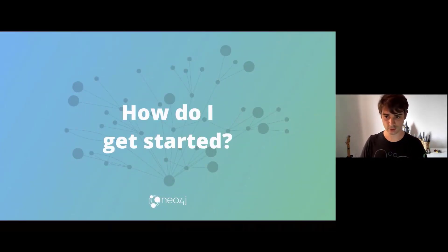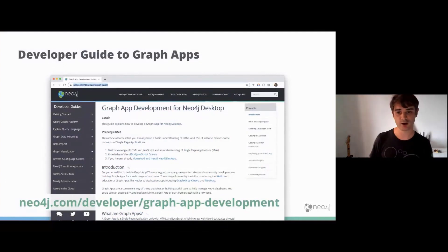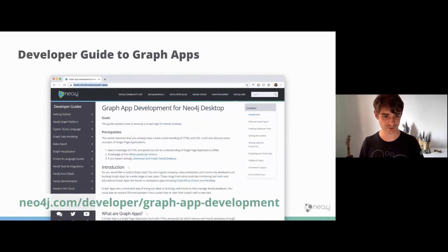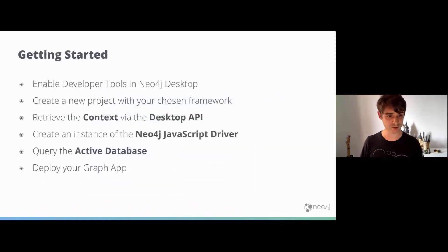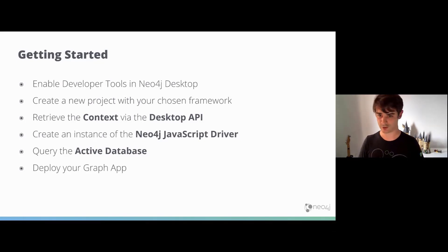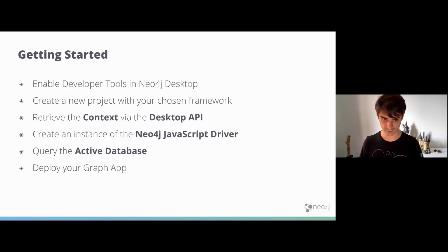So if you're sold on building your own — there's a developer guide at neo4j.com/developer/graph-app-development, and a set of example apps on GitHub.com/neo4j-apps/graph-app-starter. The process is: enable developer tools inside Desktop, create a project with HTML, JavaScript, or a framework of your choice, get the context from the Neo4j Desktop API, create an instance of the JavaScript driver, and then query the active database.